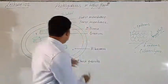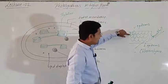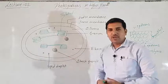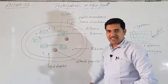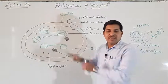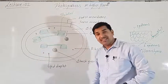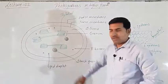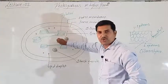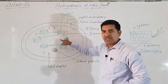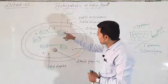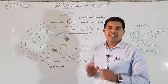Chloroplast is a double membrane structure present in the mesophyll region of the leaves. Its main function is photosynthesis. One part of photosynthesis occurs in the thylakoid, and the second part occurs in the stroma. The next major part of the chapter we are going to discuss is in the part of the thylakoid as well as in the stroma. Until we complete the chapter, everything we discuss is within the chloroplast.